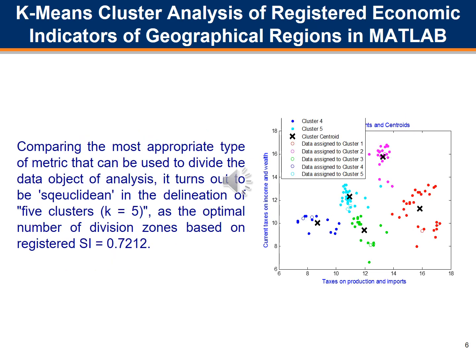The method was applied to different metrics between information sets including values of indicators such as taxes on production and imports, and current taxes on income and wealth for six economic regions — specifically skew-Euclidean, cityblock, cosine, correlation, and Hamming metrics. Comparing these metrics, the most appropriate type turns out to be skew-Euclidean, yielding five clusters as the optimal number of divisions based on SI values.